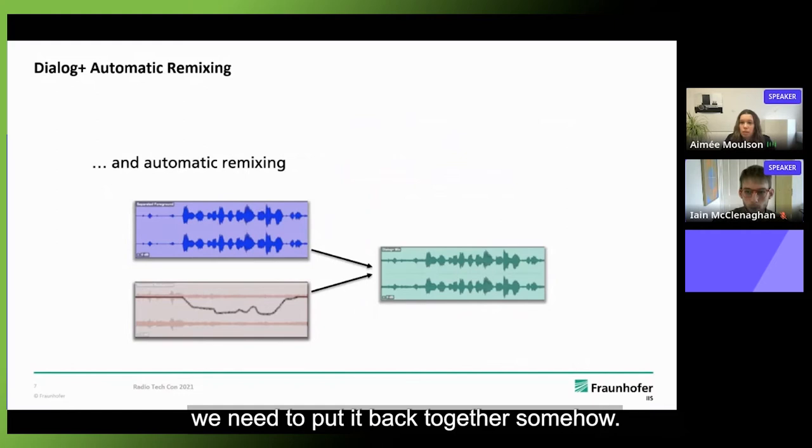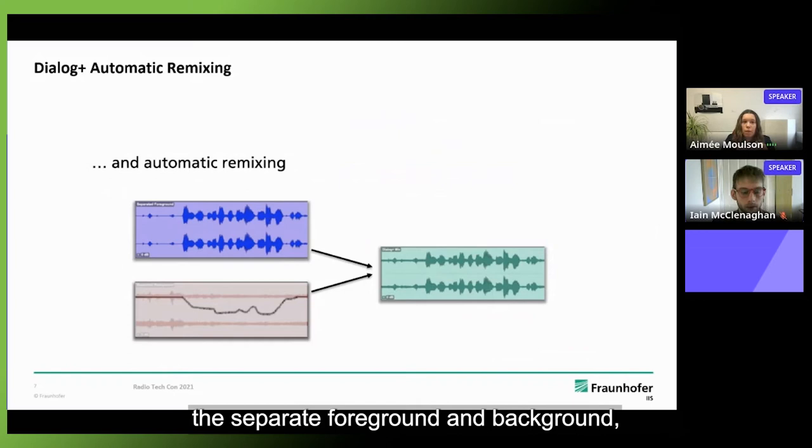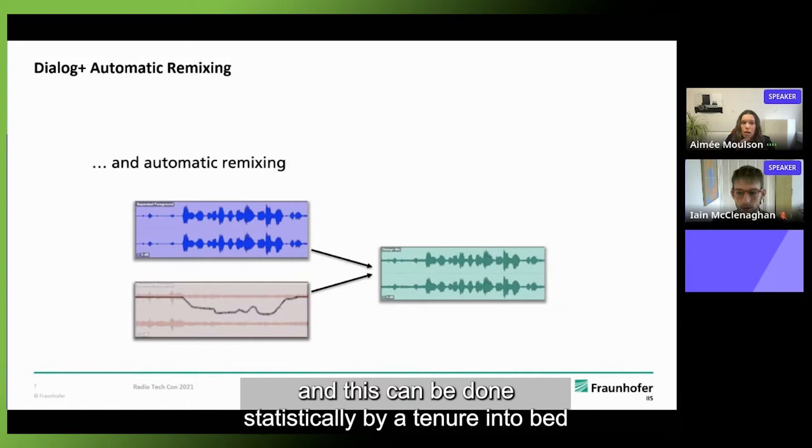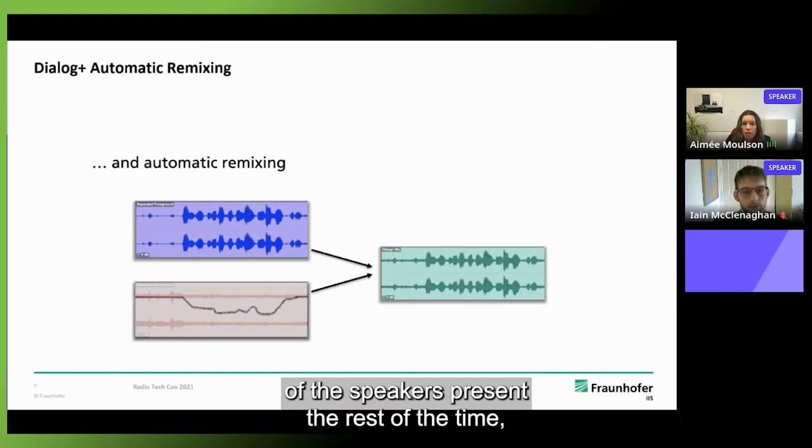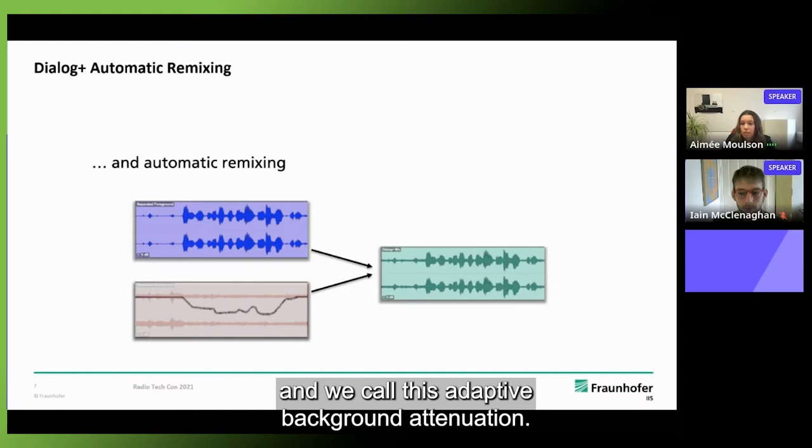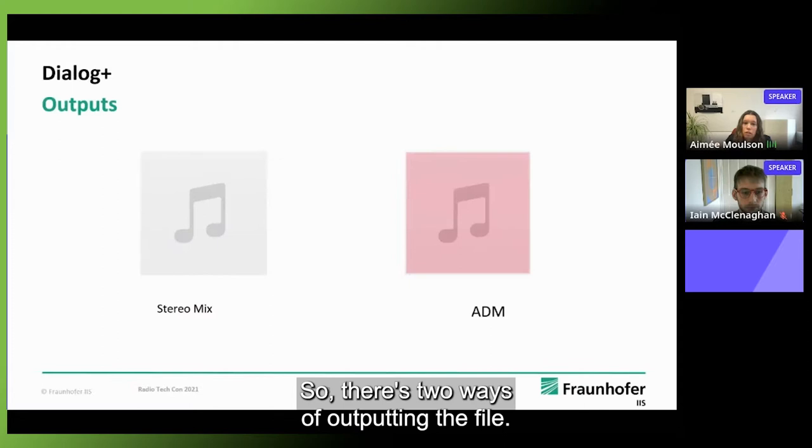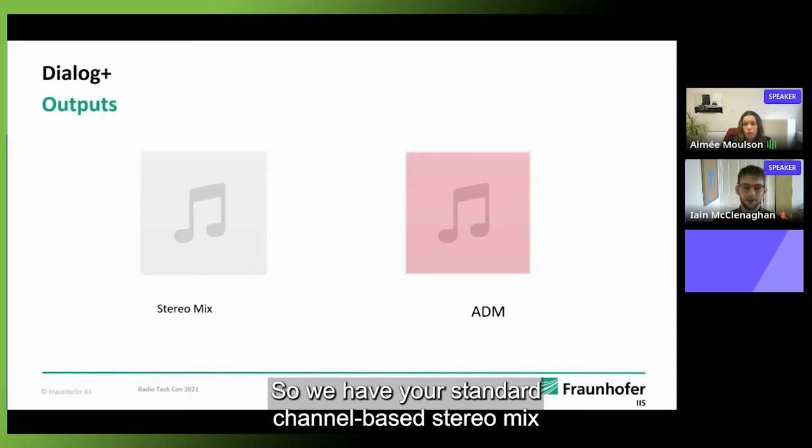So once we have the separated files, we need to put it back together somehow. In the second step, the separate foreground and background are remixed into this new audio version and this can be done statically by attenuating the bed dynamically or a combination of both. But the dynamic approach has the benefit that the audio mix is only touched when the speech is present. The rest of the time the audio mix isn't affected and we call this adaptive background attenuation. You can kind of think of this a bit like side chain compression.